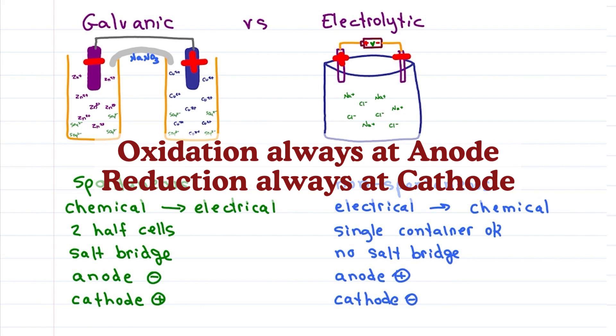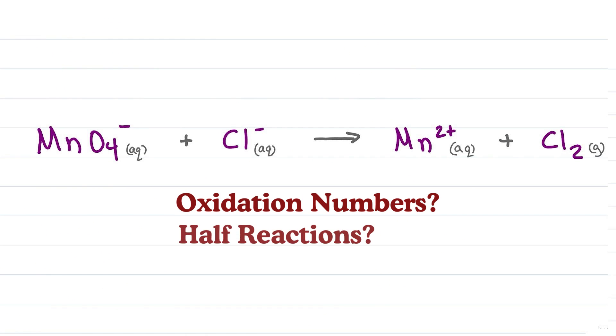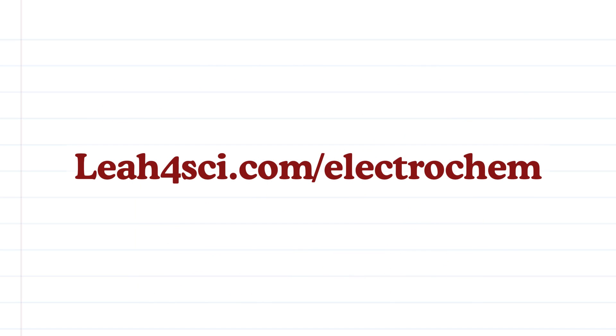Oxidation always occurs at the anode and reduction always happens at the cathode. What about this reaction? Can you find the oxidation numbers, the half reactions, and then balance it in an acidic solution? That's exactly what I teach in this video, which you can find on my website at leah4sci.com/electrochem. Again, that's leah4sci.com/electrochem.